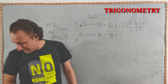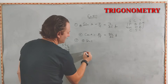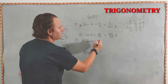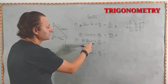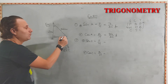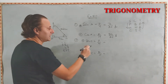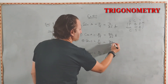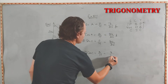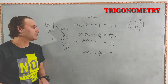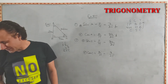The second part asks for sin C and cos C. Sin is perpendicular upon hypotenuse, and cos is base upon hypotenuse. Now the angle has changed to C. So here perpendicular is 24 and hypotenuse is 25. Therefore sin C equals 24 upon 25. For cos C, base is 7 and hypotenuse is 25, so cos C equals 7 upon 25. That completes question number one.